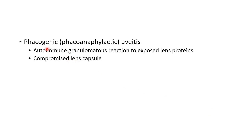Coming to another entity — phacogenic glaucoma, or phacoanaphylactic uveitis. In this case, it is an autoimmune granulomatous reaction to exposed lens proteins. Remember, in phacoanaphylactic uveitis there is a compromised lens capsule — the lens capsule is breached — whereas in phacolytic glaucoma the lens capsule is not breached.